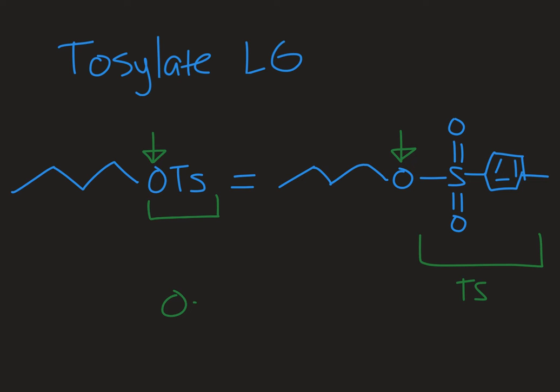Essentially when it leaves you end up with an oxygen that is negatively charged and then it has all these resonance structures because of its position. And any time a charge can be delocalized it's going to be more stable and that's going to make a better leaving group.